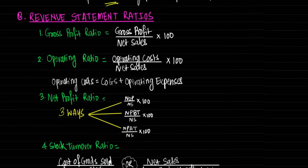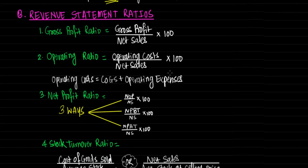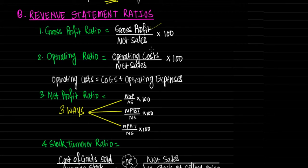Now let's begin with revenue statement ratios. First is gross profit ratio, calculated as gross profit divided by net sales into 100. We have already learned how gross profit is calculated in the trading account. Net sales refers to sales minus sales return. That's how gross profit ratio is calculated.